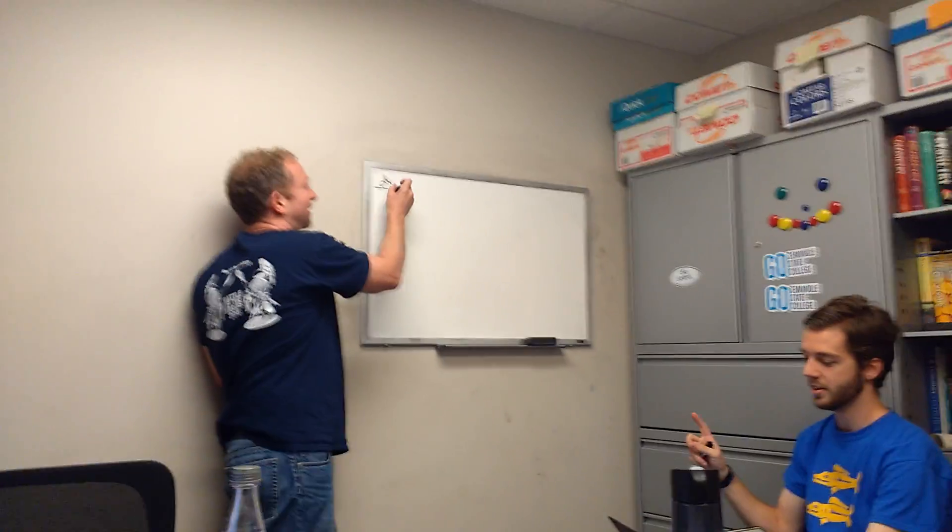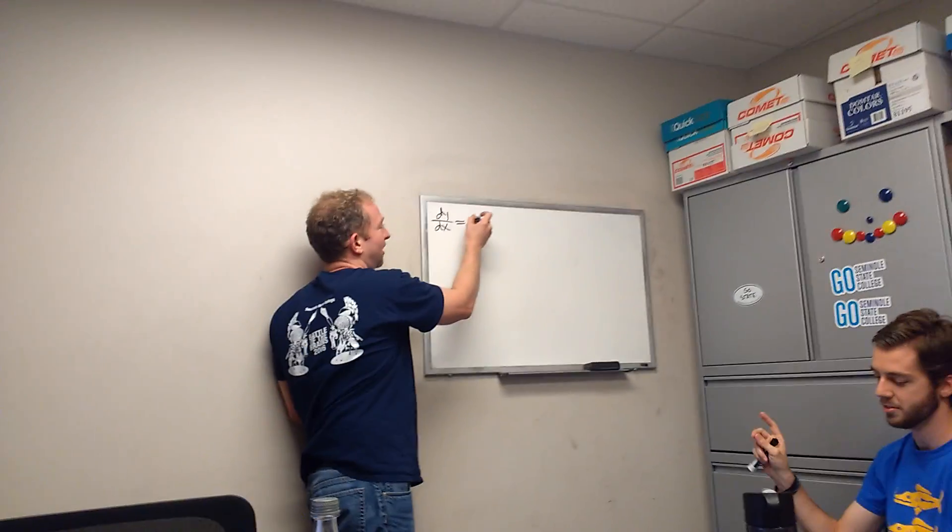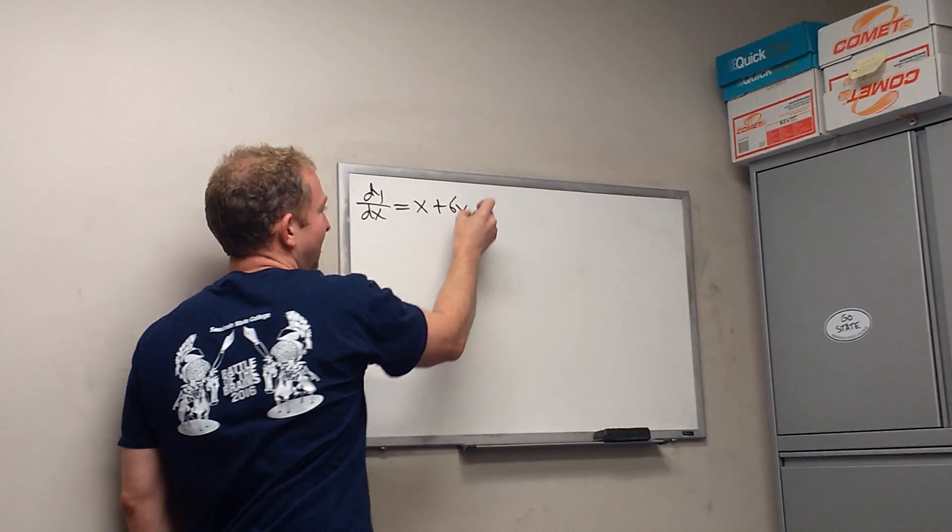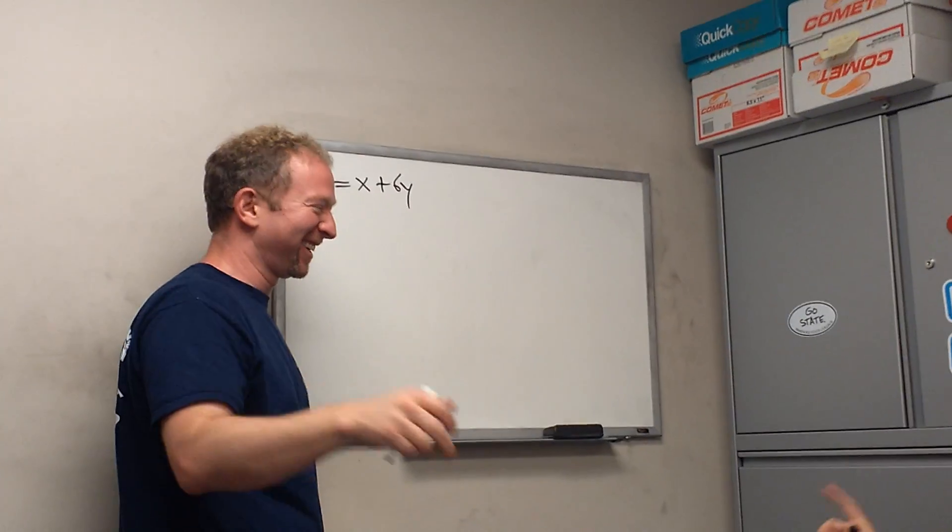Okay. dy/dx equals x plus 6y. Your condition is that y of 0 equals 7.